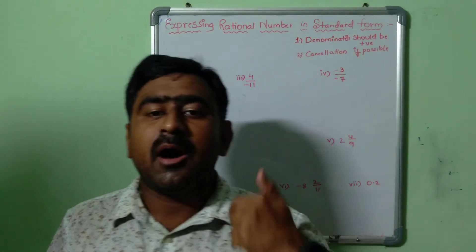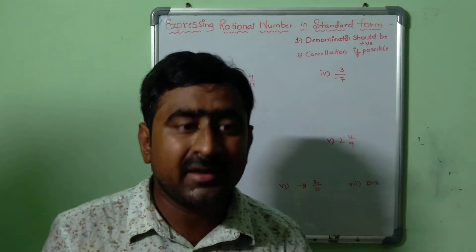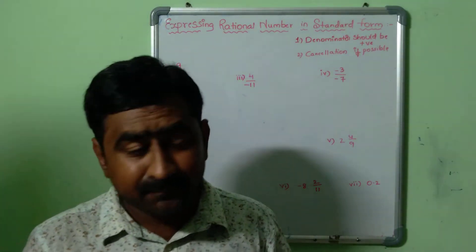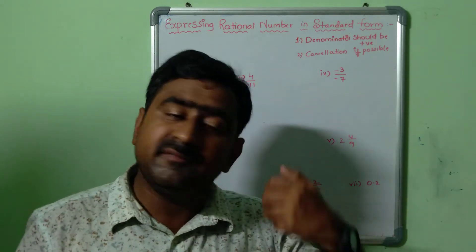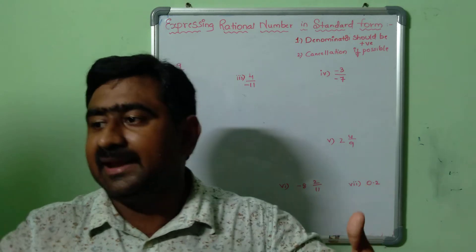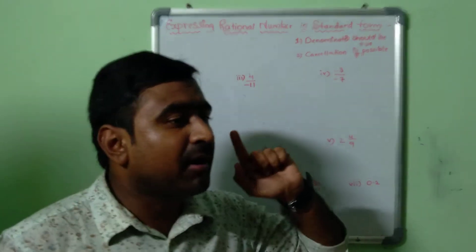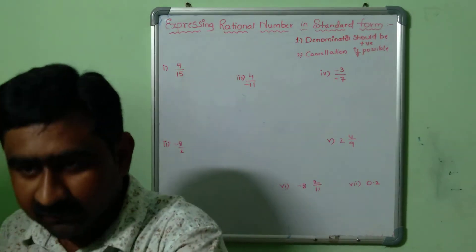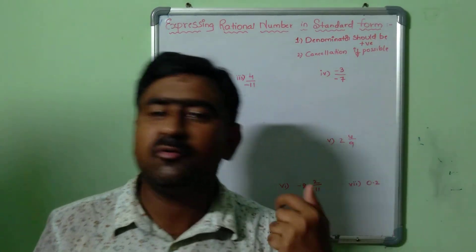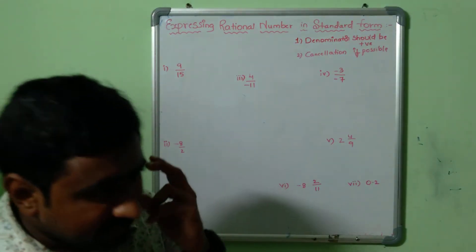The second step is: after converting a negative denominator into a positive denominator, try to cancel the numerator and denominator if possible — that is cancellation of terms. If there is no chance of cancellation, leave the rational number as it is. So the two steps are: first, denominator should always be positive; second, cancellation if possible.